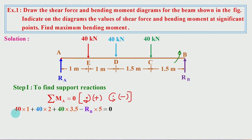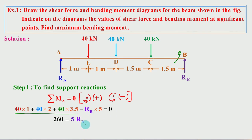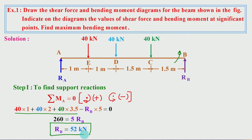Calculating: 40×1 + 40×2 + 40×3.5 = 260. So 260 minus 5·RB = 0, therefore RB = 260/5 = 52 kN.